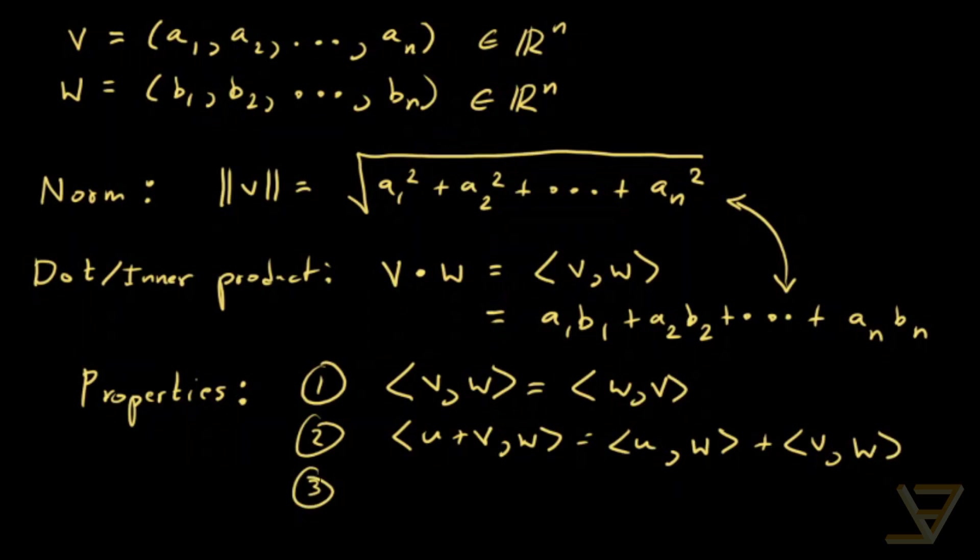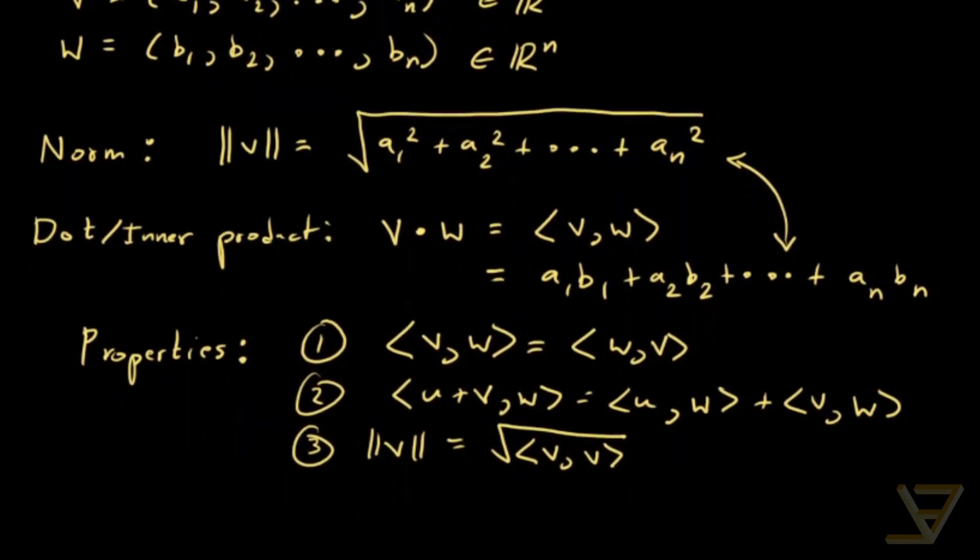Finally, we have the link between the norm and the inner product, which states that ||v|| = √⟨v, v⟩. That's going to be our main tool in proving the Euclidean triangle inequality.